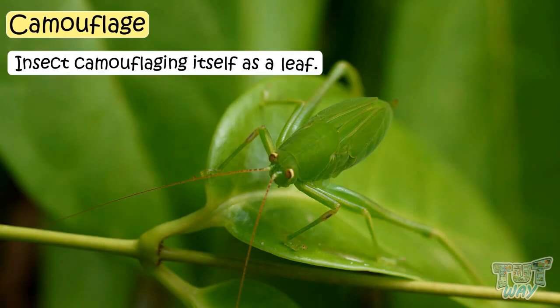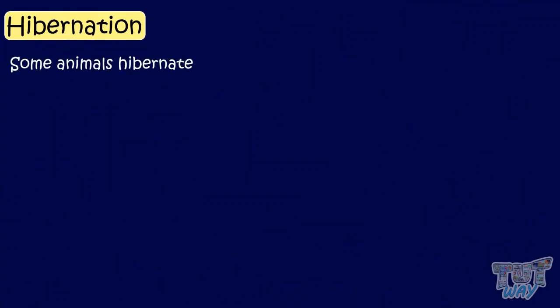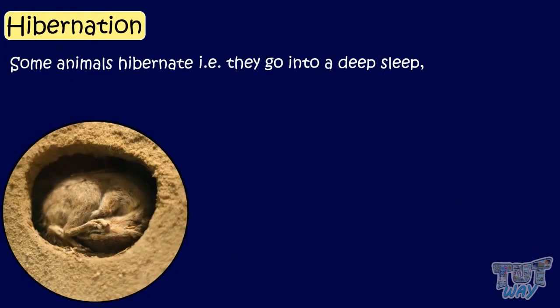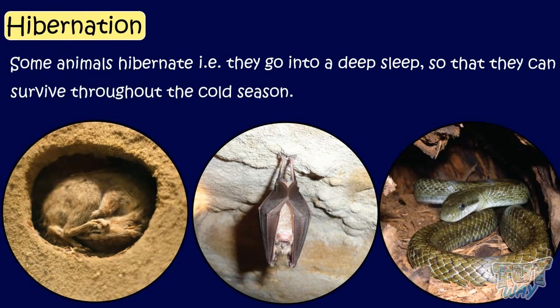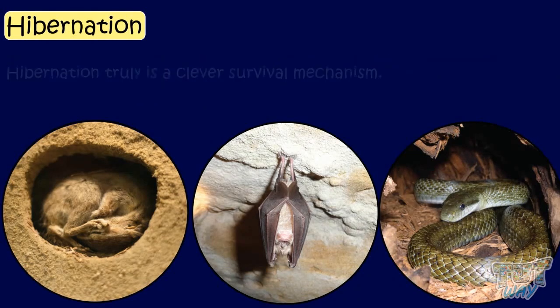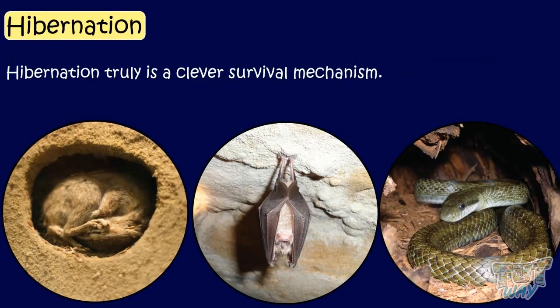Now let's learn another type of adaptation in animals — it is hibernation. Some animals hibernate, that is, go into deep sleep, so they can survive throughout the cold season when the weather is freezing and the food is scarce. Hibernation truly is a clever survival mechanism. Now let's see some animals that can hibernate.